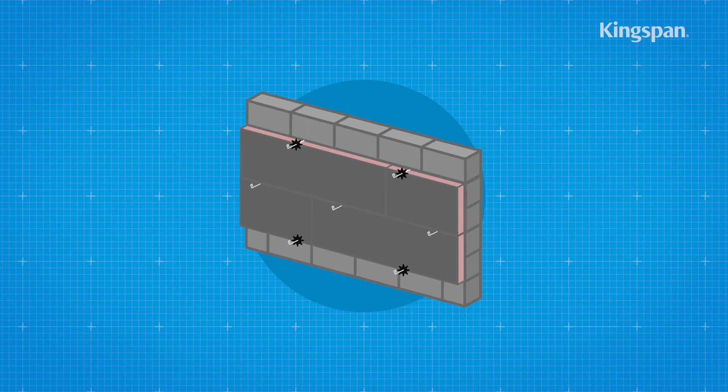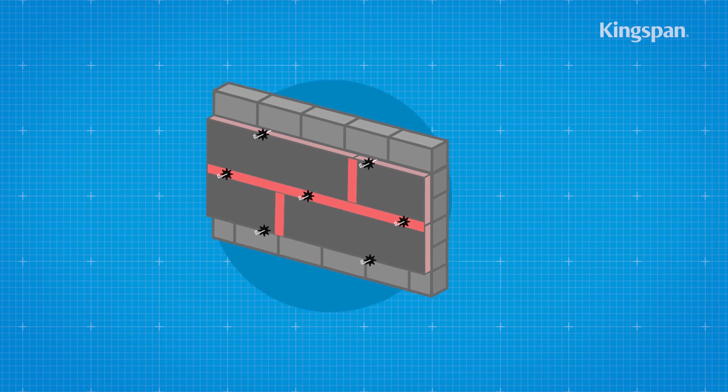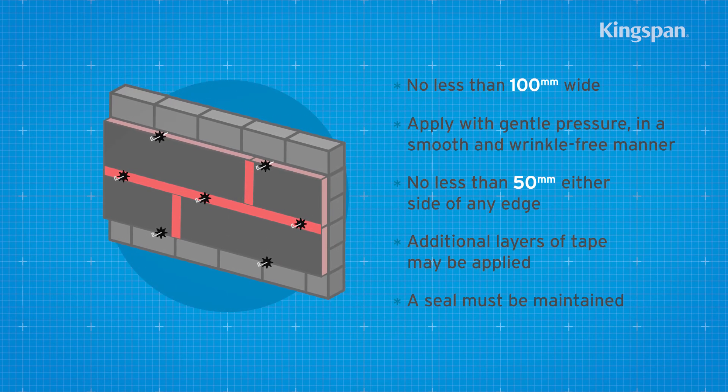Apply a self-adhesive breathable tape to all horizontal and vertical joints, board edges, and abutting junction interfaces.